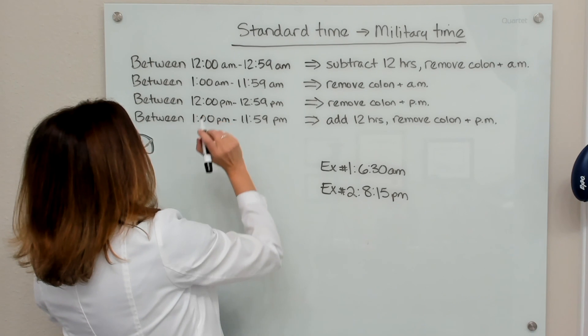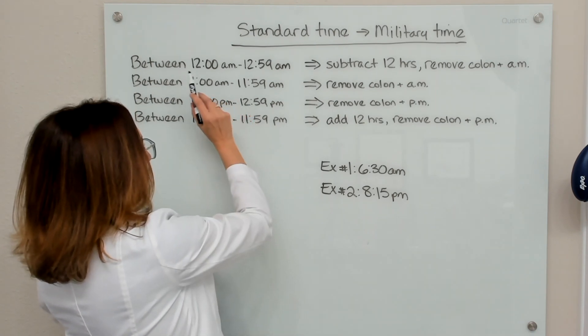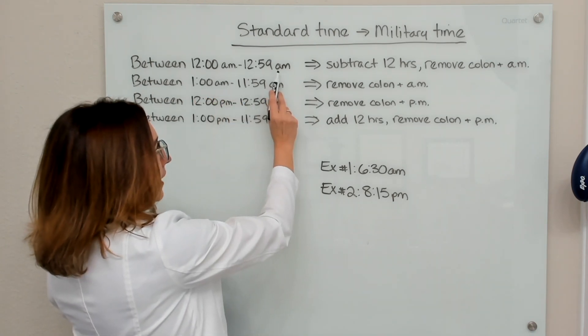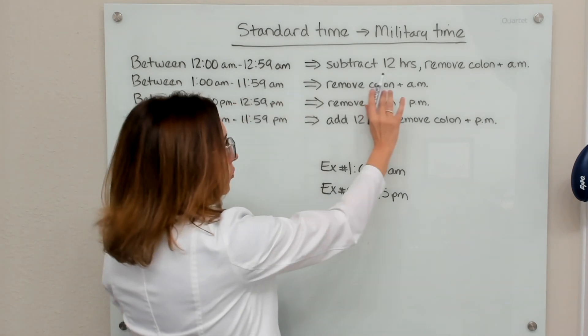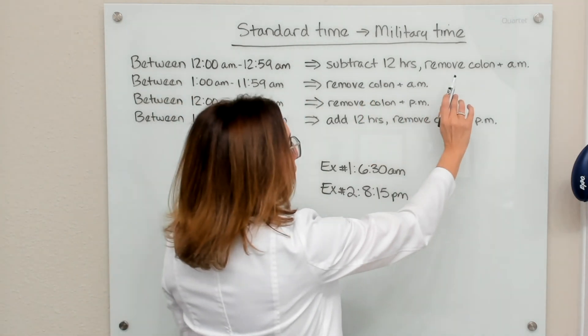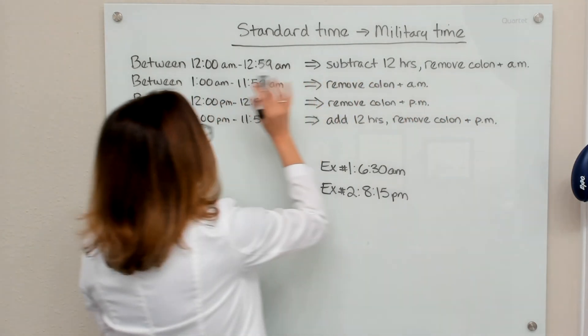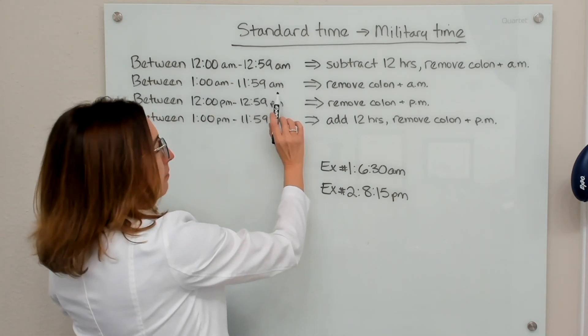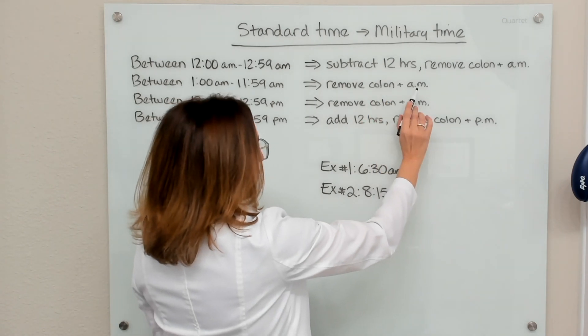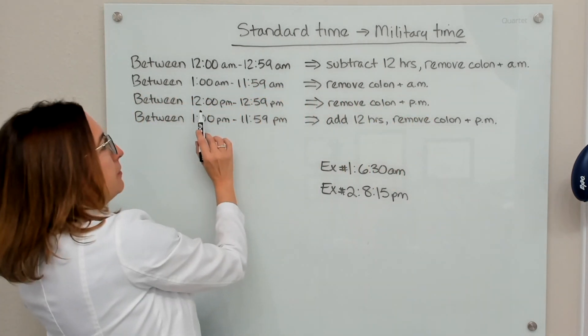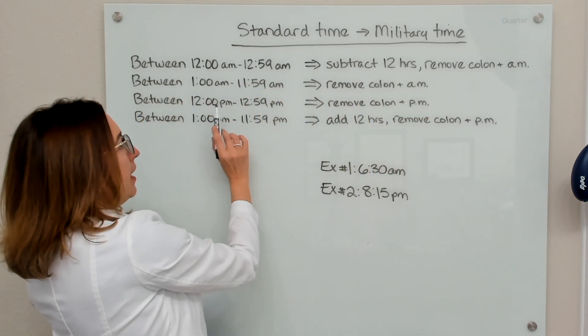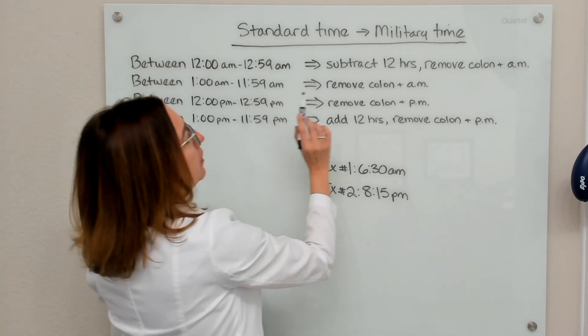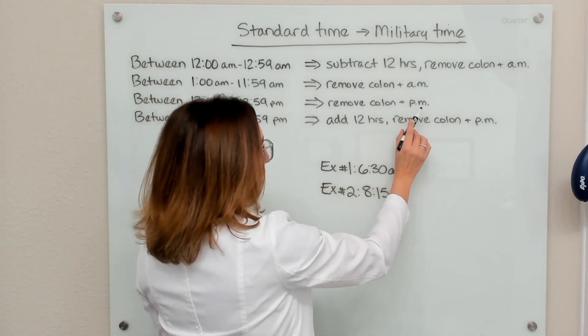So if the standard time is between 12 a.m. and 12:59 a.m., you need to subtract 12 hours, remove the colon and the a.m. If you have a standard time between 1 a.m. and 11:59 a.m., you simply need to remove the colon and a.m. If you have a standard time between 12 o'clock p.m. and 12:59 p.m., you need to remove the colon and the p.m.